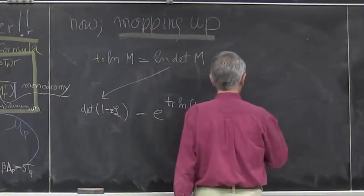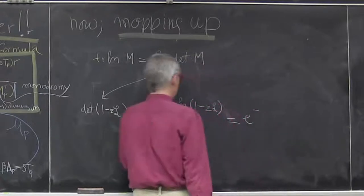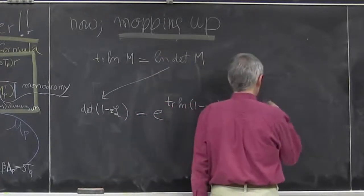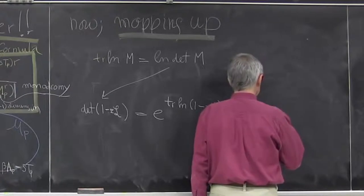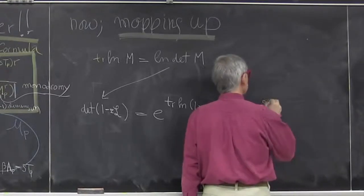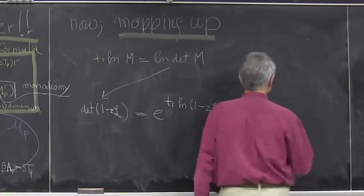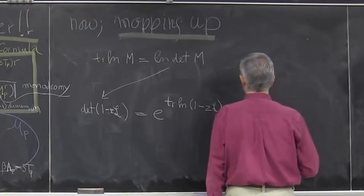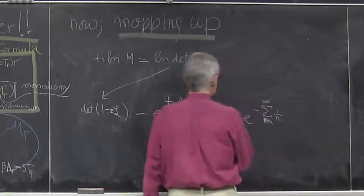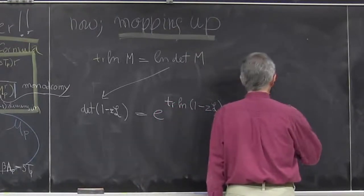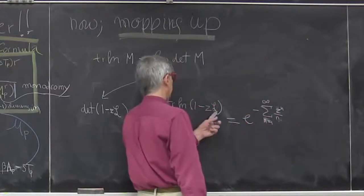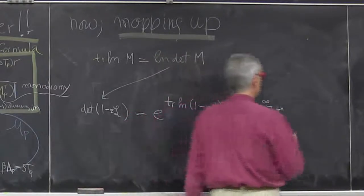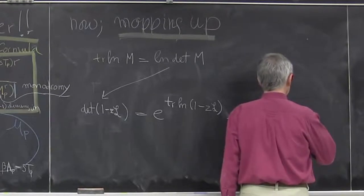So then we use a famous identity that says logarithm is minus sum, n equals 1 to infinity. Instead of factorial for logarithm, you have 1 over n here, and then you get this thing to the nth power. And this is a matrix model, it's an operator, you get a trace of the logarithm of the matrix.